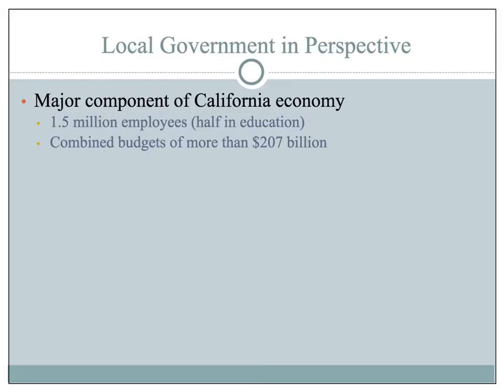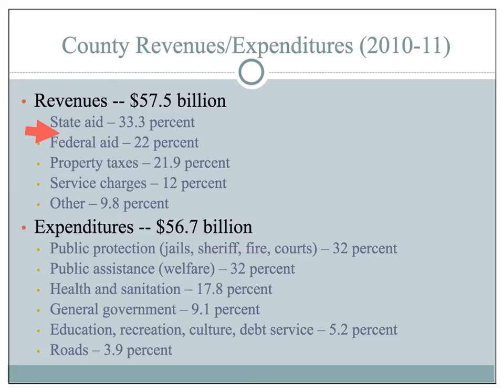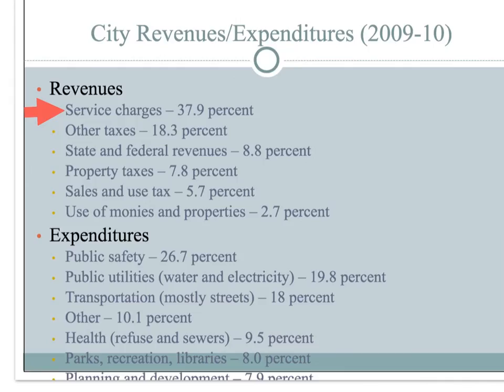Local government is a major component of California's economy. Counties receive most of their revenue from state and federal aid, which accounts for more than 55% of revenue. Counties spend almost 65% of their money on public protection and public assistance. For cities, their largest source of revenue is charges for services such as sewage treatment, trash collection, building permits, and use of recreational facilities. Their major expenditures are public safety and public utilities.